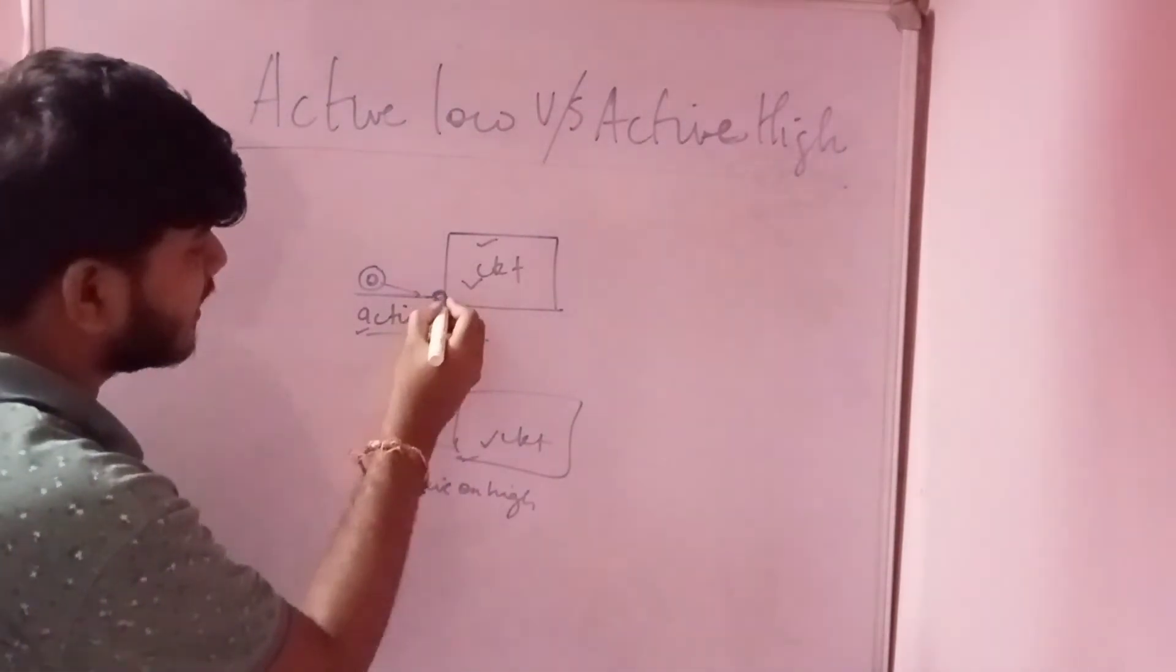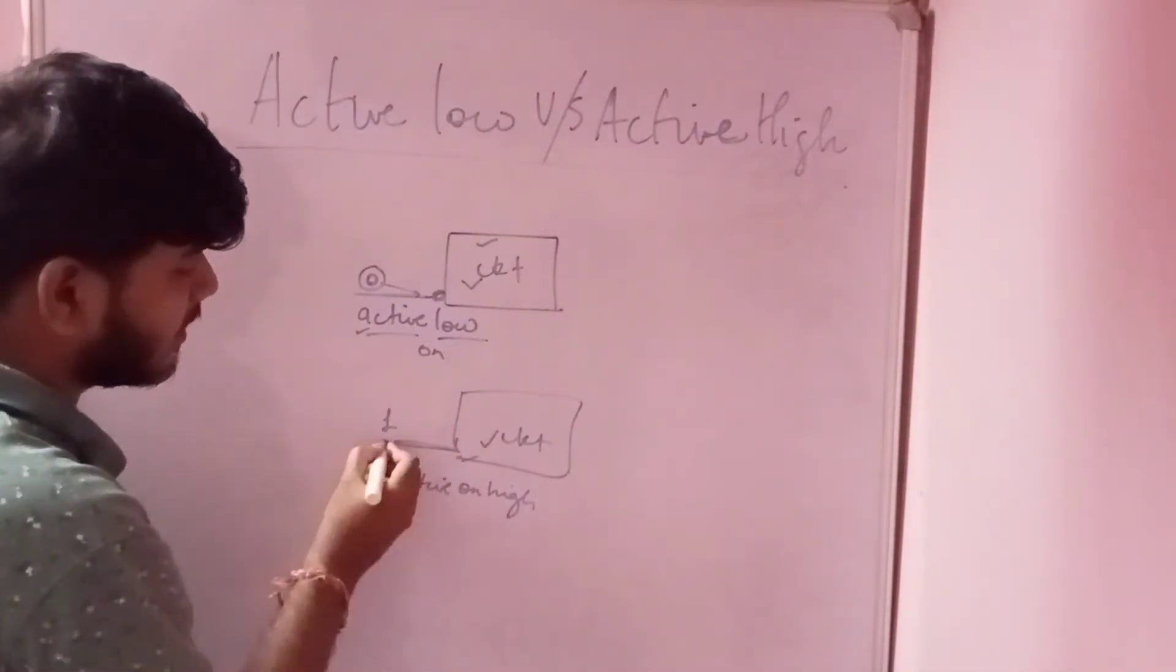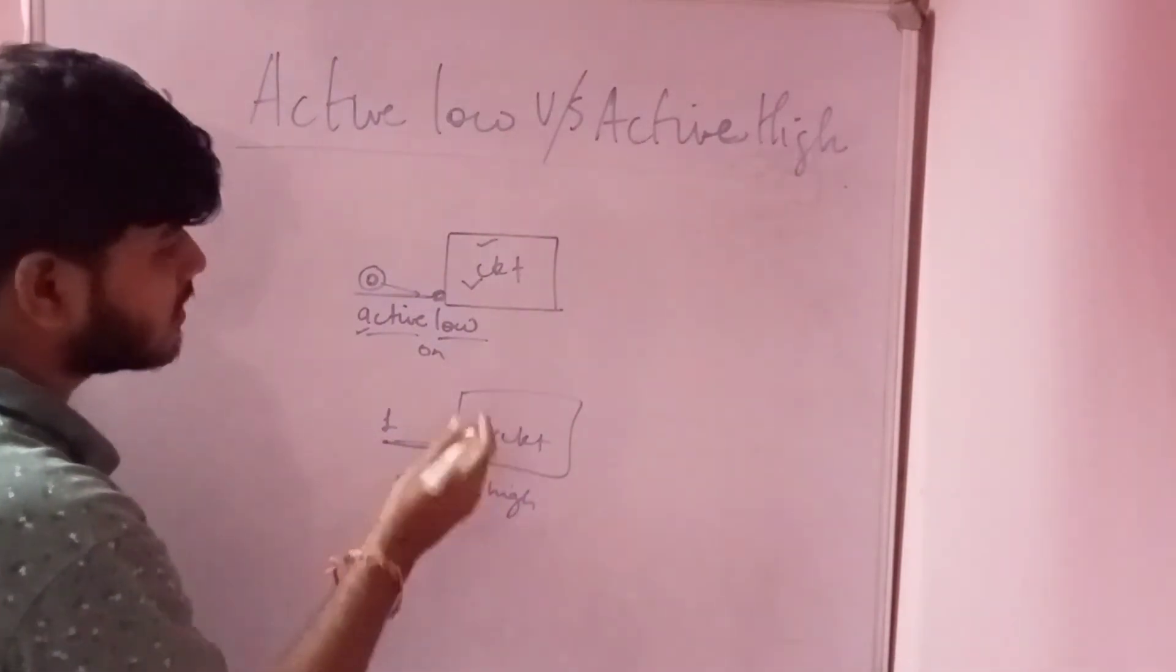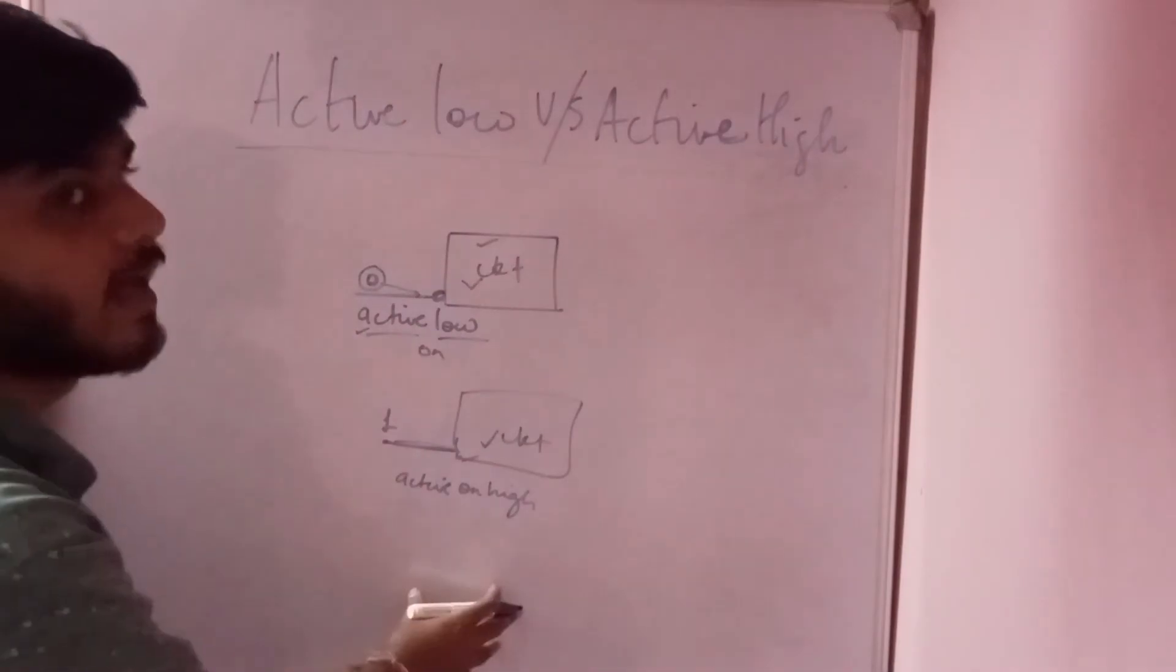So active low is basically indicated using a bubble, whereas active high is not indicated using a bubble. This is the basic difference between active low and active high.